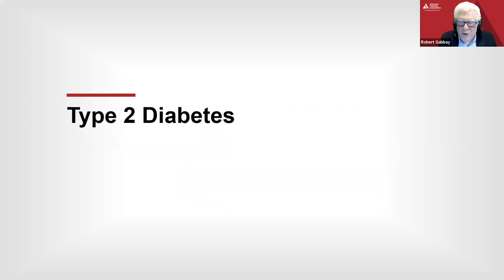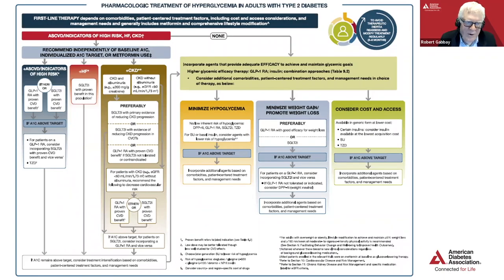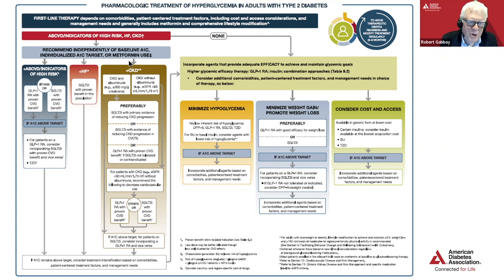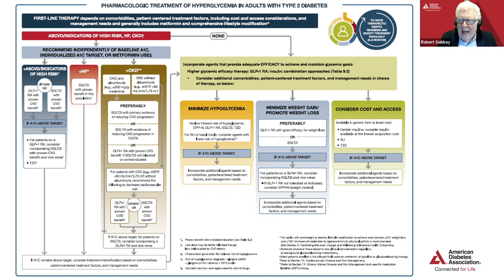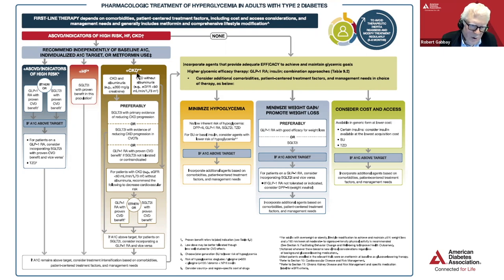Now moving to treatment of type 2 diabetes. For all individuals, we recommend lifestyle modification. We then move into particular therapeutic choices based on comorbidities. Although metformin is generally the first-line therapy, individuals may be put on other therapies based on their comorbidities, even in the absence of being on metformin. Whether somebody has atherosclerotic cardiovascular disease or high risk, or heart failure or chronic kidney disease, you can see the recommendations for therapy.